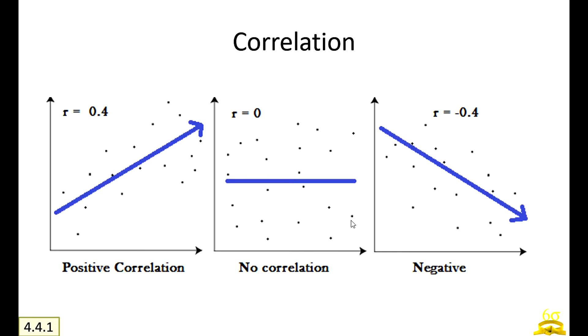This is how we visualize correlation. If the data is very highly correlated and it has a positive correlation, you will find the graph like this if you plot in X and Y axis. If there is no correlation, you will find it more or less flat. If you find it downward, then you can say that there is a negative correlation. This is minus 0.4, this is 0, and this is positive 0.4.